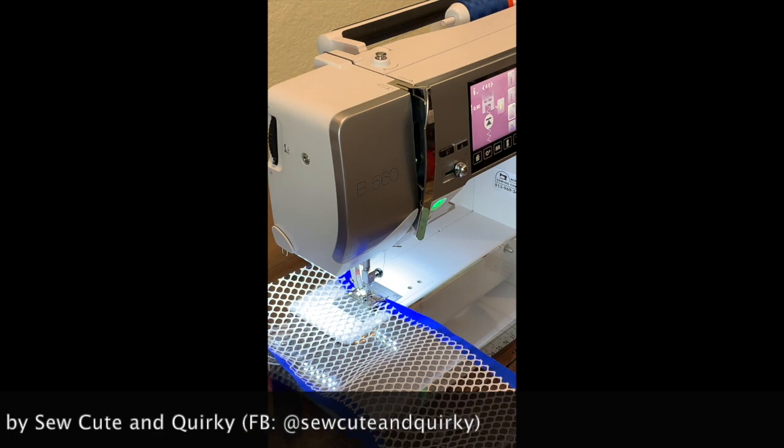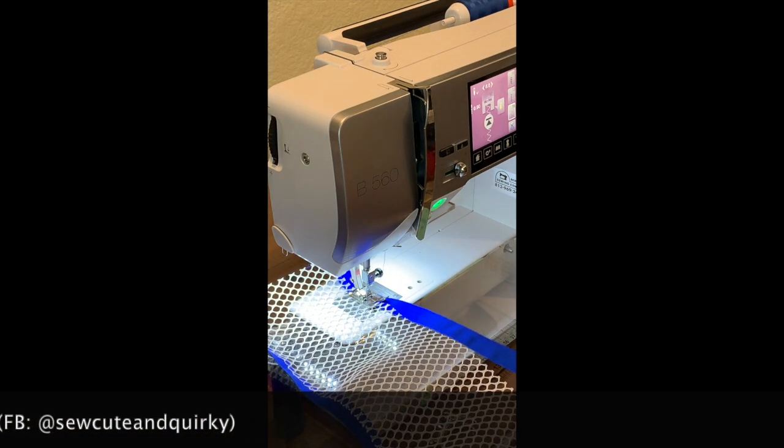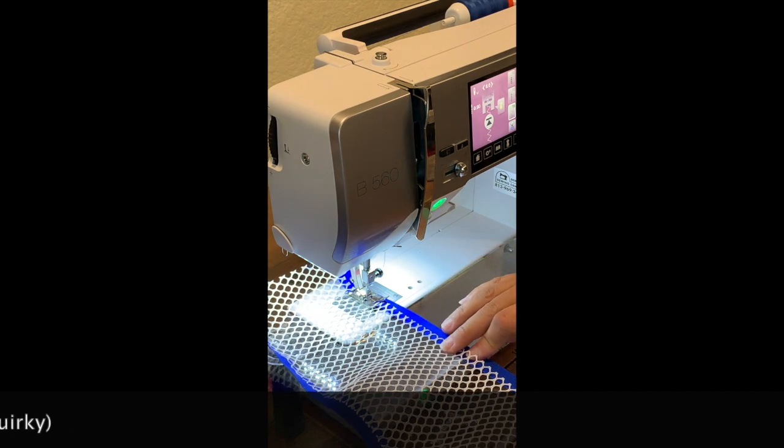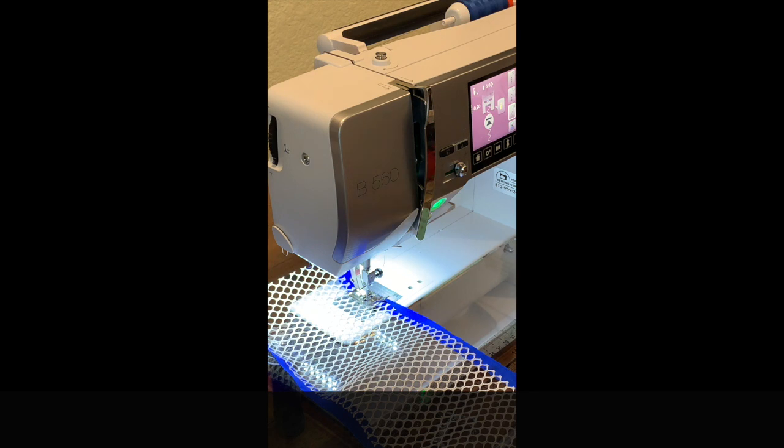Using it with mesh, typically the best way to do this, what I have found, is to put the fold over elastic under the mesh and then also set your machine to a three-step zigzag stitch.